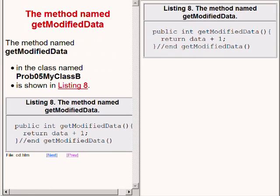Because the class named prob05MyClassB implements the interface named prob05x, it must define in concrete form the method named getModifiedData, or the class itself must be declared abstract. In this case, the class was not declared abstract, and the concrete definition of that method is shown on the upper right of your screen.